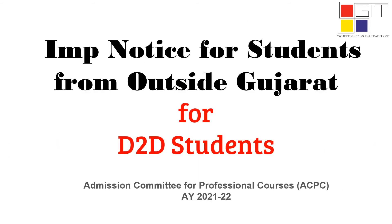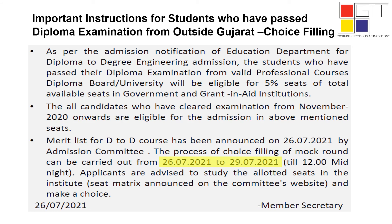There is one important notice for D2D students from outside Gujarat regarding choice filling. As per the admission notification of the education department for diploma-to-degree engineering admission, students who have passed their diploma examination from a valid professional courses diploma board or university will be eligible for 5 percent of total available seats in government and grant-in-aid institutions. All candidates who cleared their examination from November 2020 onwards are eligible for admission in these seats.